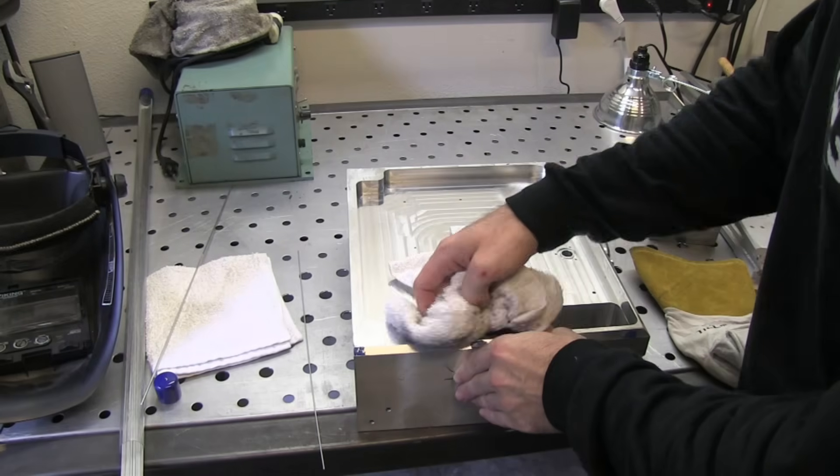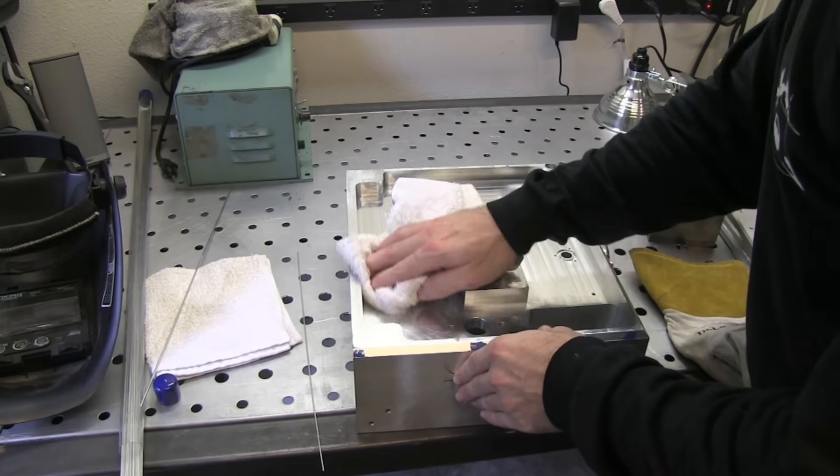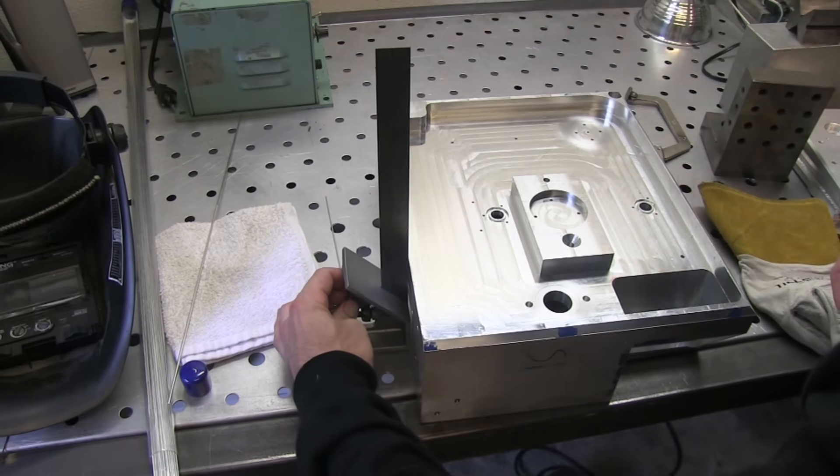You always need to have the metal as clean as possible, especially when you're using DCEN. So a good acetone wipe prior to welding really helps.